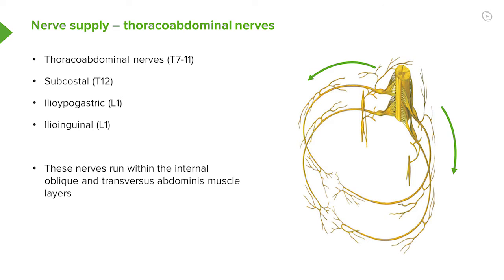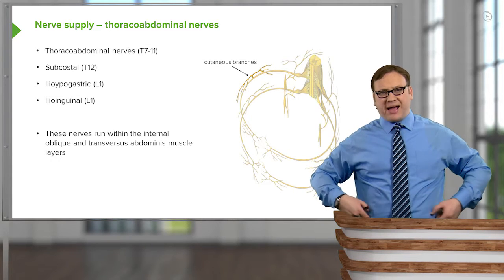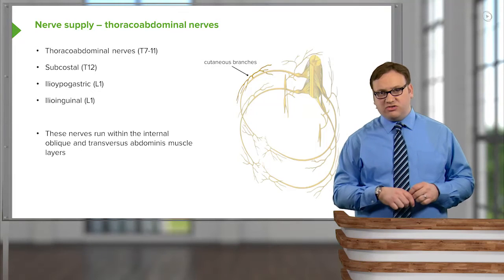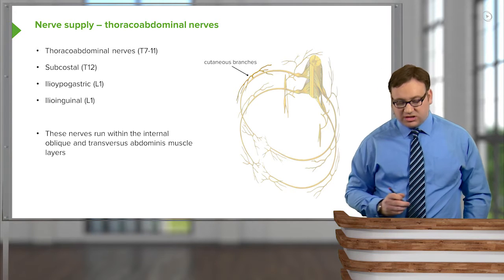As mentioned throughout the lecture, the nerves that supply these muscles come from T7 to T11 — your thoraco-abdominal nerves — and the subcostal nerve, which is T12. This could be T12 here, and the one directly inferior to it could be L1. Importantly, these nerves are branching around; they run in between the internal oblique and transversus abdominis muscle layers. We also have cutaneous branches that supply the skin, creating the banding — the dermatomes — the sensory distribution from the skin.